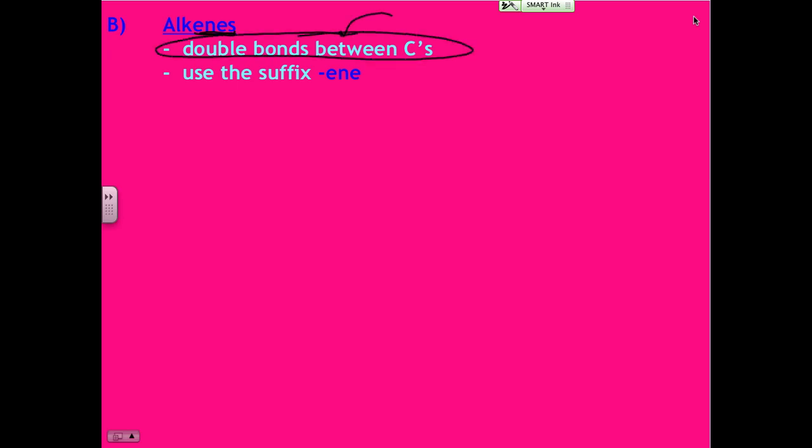All right, so the last thing I want to talk about today is looking at alkenes. Notice the ending E-N-E, the difference is that there are double bonds between carbons.